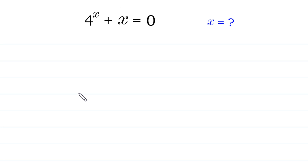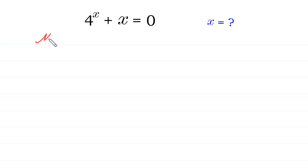Hello, welcome to how to solve this exponential equation: 4 to the power x plus x is equal to 0. We will solve it by two methods. Let us start with Method 1.